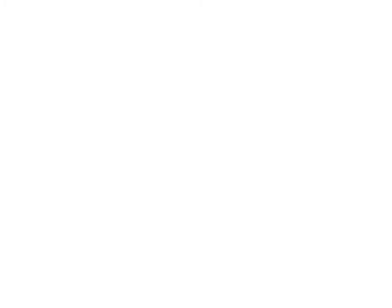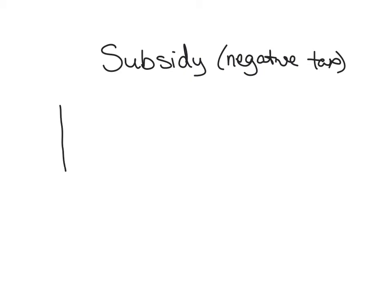On the next slide here, I'm going to draw just a new market and show you what a subsidy looks like or a negative tax. I'm going to draw two graphs. One is going to be just a regular tax and then the other one is going to be a subsidy.